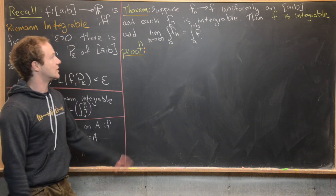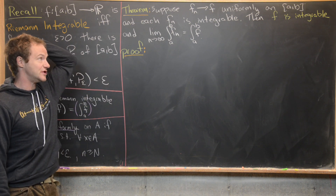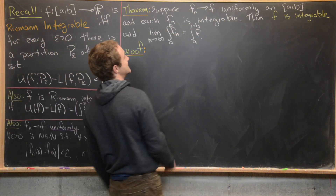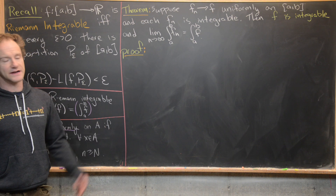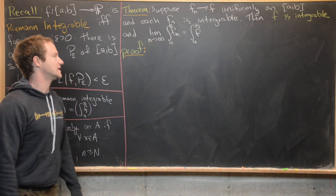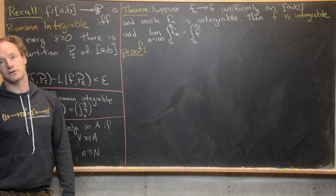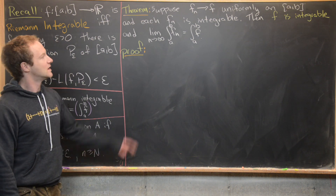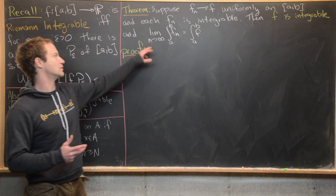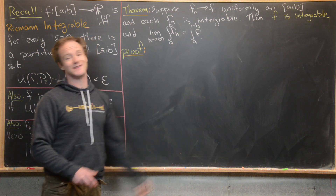The theorem we're going to prove goes like this. Suppose that f_n converges to f uniformly on an interval [A,B] and each f_n is integrable on that interval. Then f is integrable on that interval, and the limit as n → ∞ of the integral from A to B of f_n equals the integral from A to B of f. We will first show that f is integrable, and then separately show that the limit of the integrals equals this number.